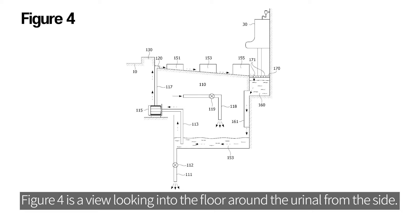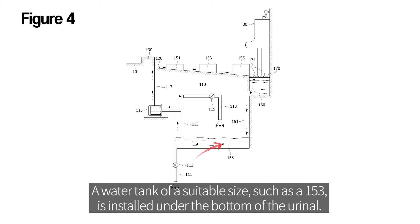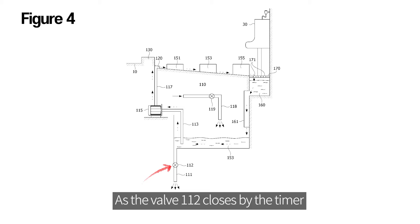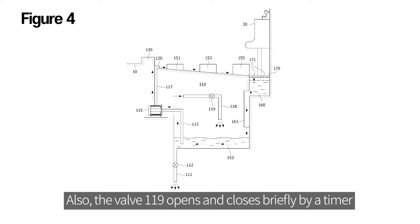Figure 4 is a view looking into the floor around the urinal from the side. A water tank of a sustainable size, such as 153, is installed under the bottom of the urinal. As the valve 112 closes by the timer, the open circuit changes to a circulating circuit.